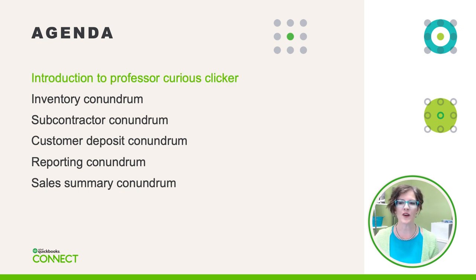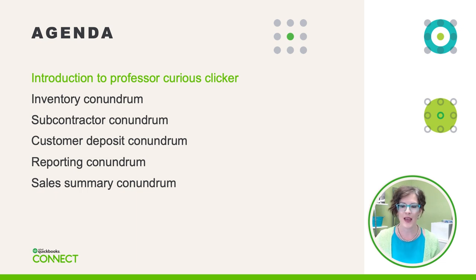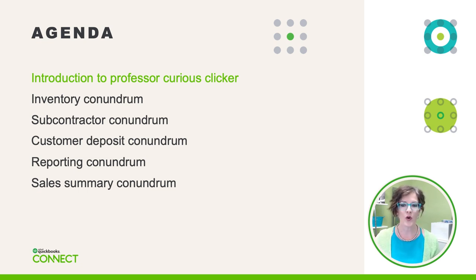First off, let me welcome you students all over the world. We're going to take a moment to return back to school at the Curious Clicker Academy. This isn't any ordinary school — this is a school where you're going to stretch your brain and have a little bit of fun at the same time. We're going to use our very best problem solving skills to find a solution to five conundrums, all while using QuickBooks Online.